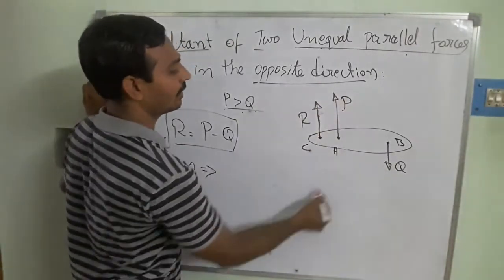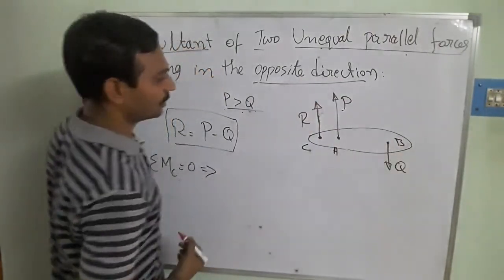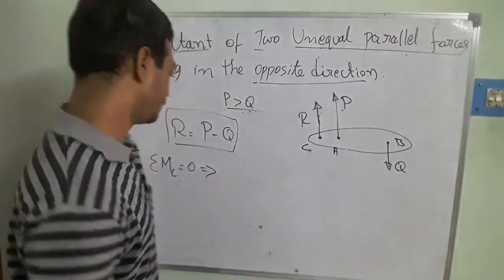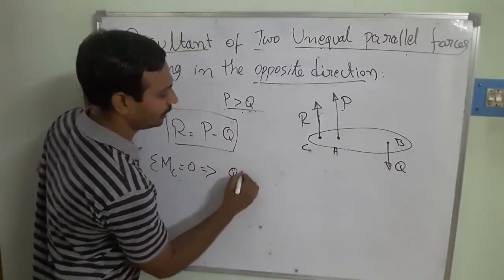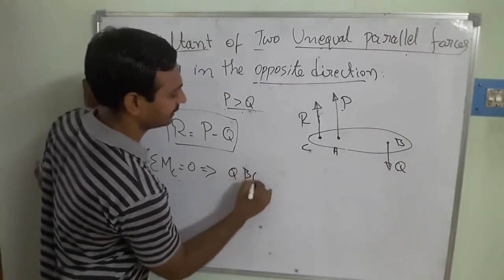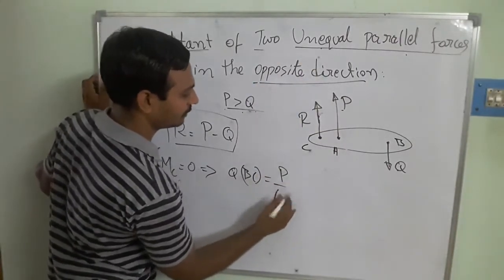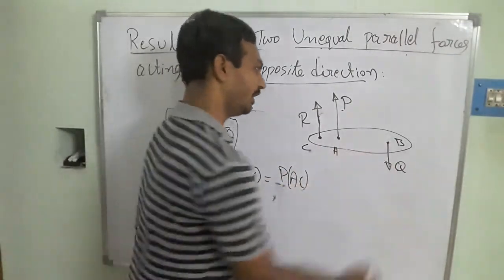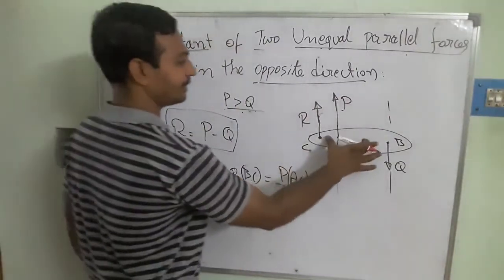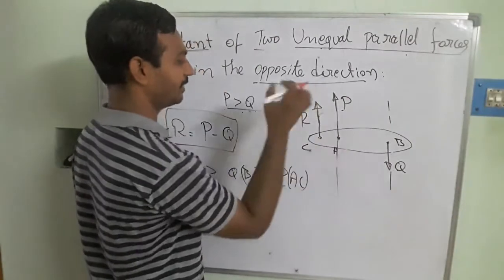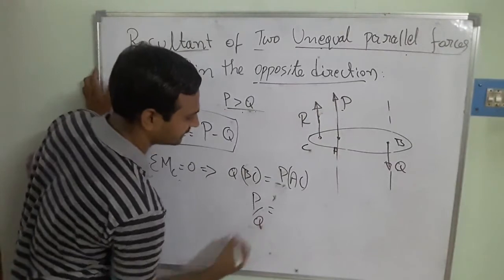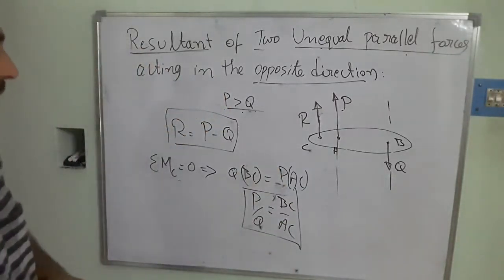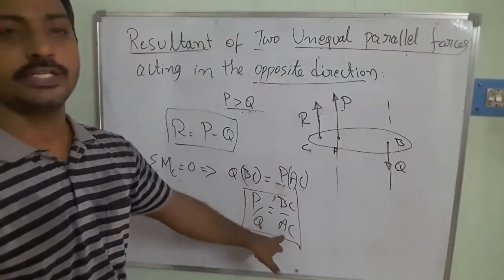Force Q acts in the anti-clockwise direction and force P acts in the clockwise direction about point C. The moment equals force times perpendicular distance to the line of action. Taking moments about C: Q × BC = P × AC. Therefore, P/Q = BC/AC. This shows that the magnitudes of the forces are inversely proportional to their distances from the observation point C.